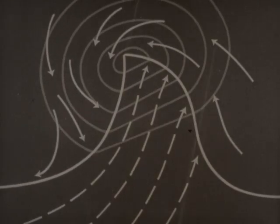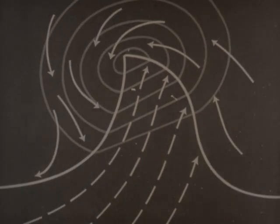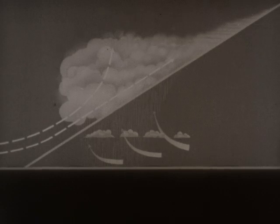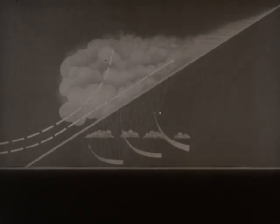In the case of a well-developed wave such as this, the lifting and expansion are sufficient to develop clouds and precipitation. Clouds may be cumulus, with heavy rains, as here, or stratus, that is sheet form, with steady light rain.